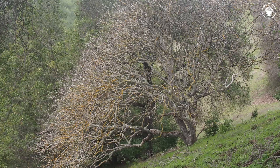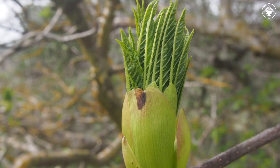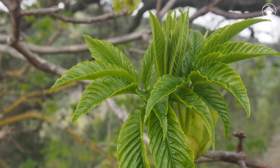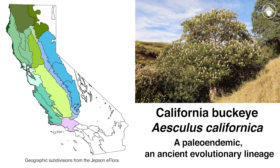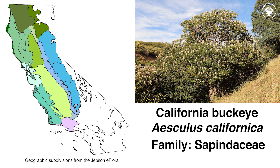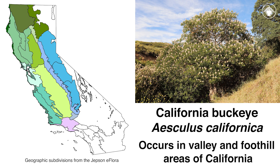After the rainy season starts and the annuals begin to grow, the buckeyes will rapidly produce a new flush of leaves. Aesculus californica is a paleoendemic of the northern and central California floristic province and represents an ancient evolutionary lineage of the family Sapindaceae. It is native to the valley and foothill areas of California and is one of the most distinctive woody plants in California.